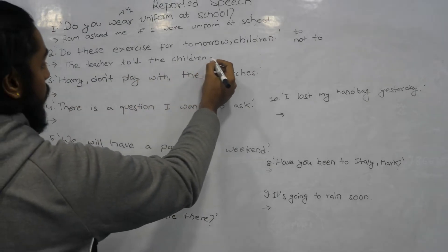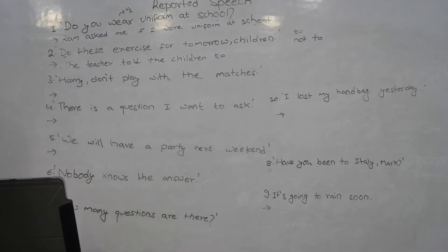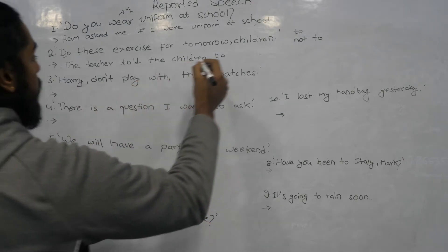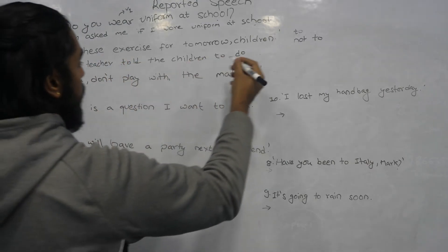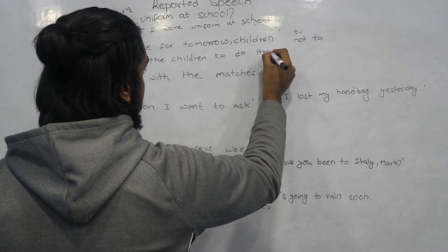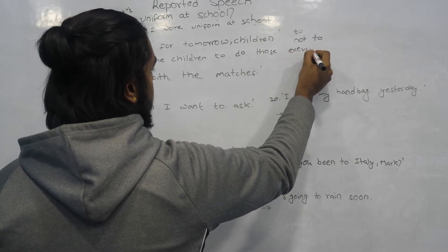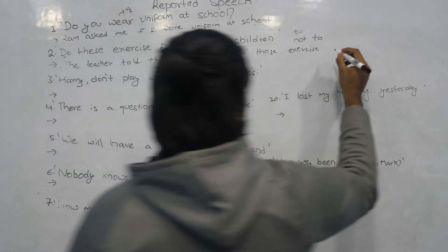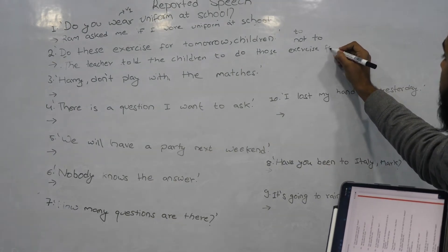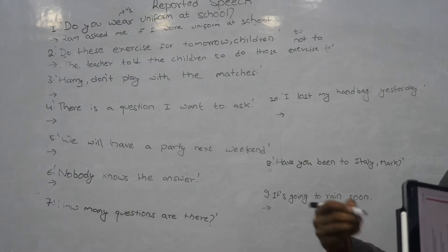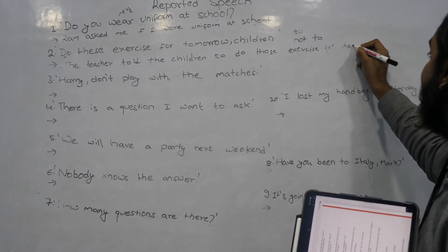For a positive imperative, we use 'to + verb.' The teacher told the children to do those exercises for the following day. 'Tomorrow' in indirect speech becomes 'the following day' or 'the next day.'